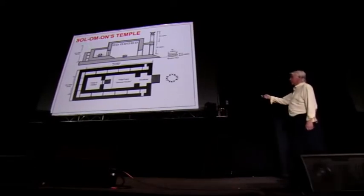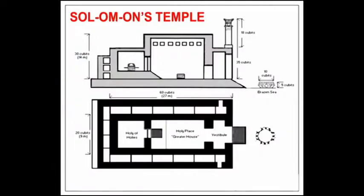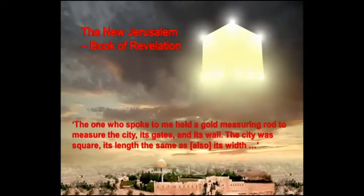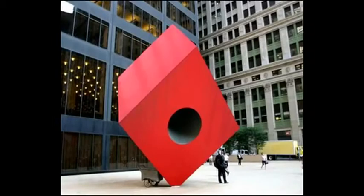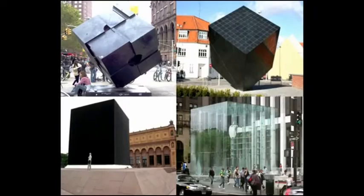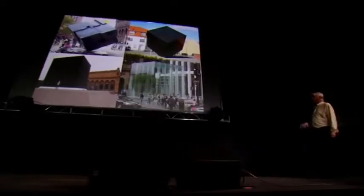In Judaism they have Solomon's Temple — every syllable of Solomon means the sun. The holy of holies in Solomon's Temple was supposed to be a cube. They talk in Revelation about the new Jerusalem in cube terms. And there are these massive black cubes outside one of the banks near Wall Street, near where the protests are.